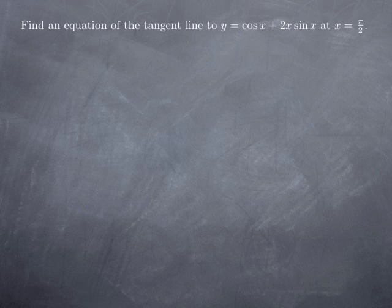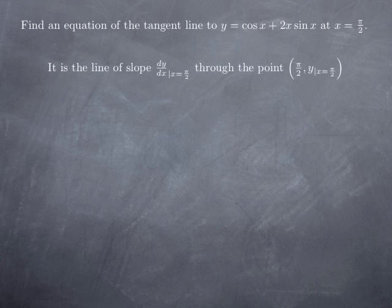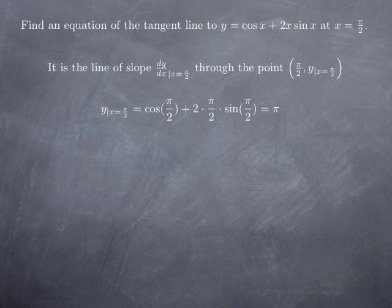Let's turn to another kind of exercise. We are looking for an equation of the tangent line to the graph of the function cosine x plus 2x sine x at x equal pi over 2. This is the line whose slope is the derivative of the function at x equal pi over 2, and which goes through the point of first coordinate pi over 2 and second coordinate the value of the function at x equal pi over 2. To get the value of y for x equal pi over 2, we plug in: we obtain cosine of pi over 2, which is 0, plus pi times sine of pi over 2, which is 1 — in other words, we obtain pi. This is the second coordinate of the point of tangency.